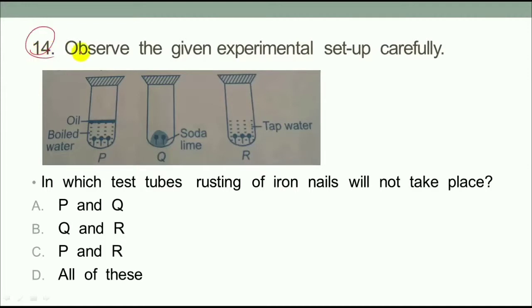This is Question 14. Observe the given experimental setup carefully. This is your experiment. Look, P, Q, and R. Three test tubes are taken. You must tell which test tube rusting of iron nails will not take place.